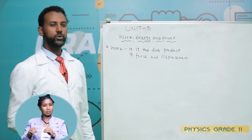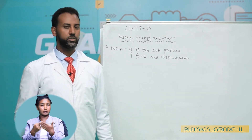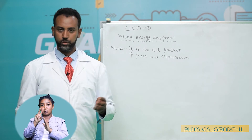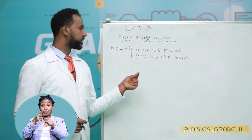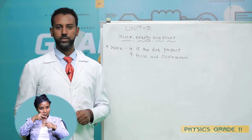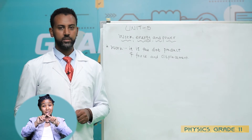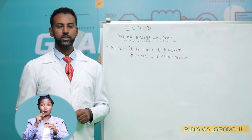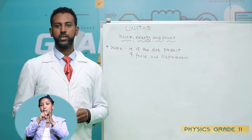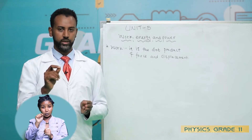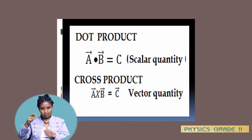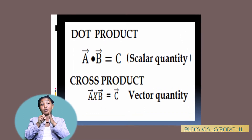I hope you already learned about the dot product and cross product of two vectors in Unit 2 under the concept of vector. When two vectors are added, the result is a vector. The difference of two vectors is also a vector. But the product of two vectors might result in a scalar or a vector depending on the type of product. For example, the dot product of two vectors gives us a scalar, whereas the cross product of two vectors gives us a vector.